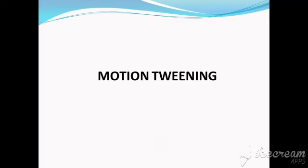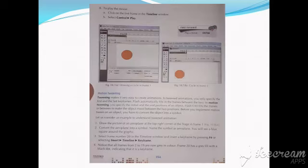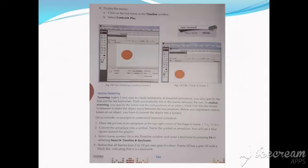In motion tweening, you can create motion between the objects. As you can see on page number 154, tweening makes it very easy to create animation. In tween animation, you only specify the first and the last key frame. It's very simple because in frame-by-frame you have to insert frames and key frames again and again, but in motion tweening you just specify the initial position and the end position of an object. You simply go to a frame number like 20 in the timeline window, insert a key frame using the shortcut keys, and then apply motion tweening.